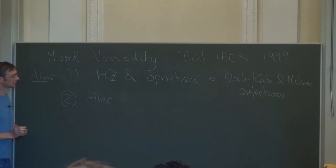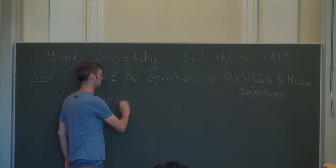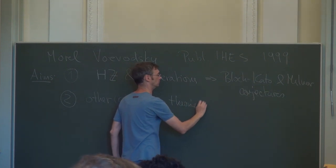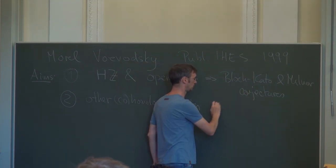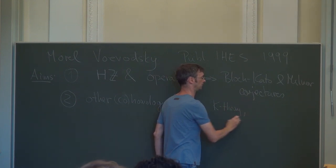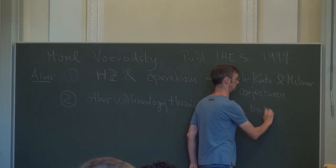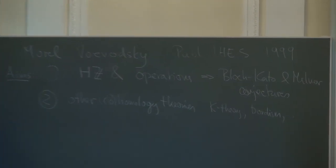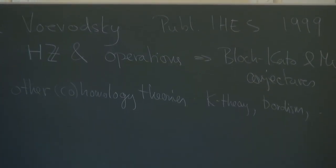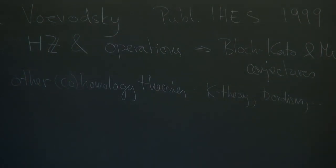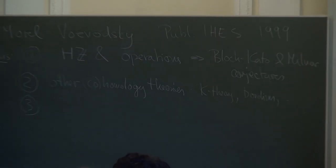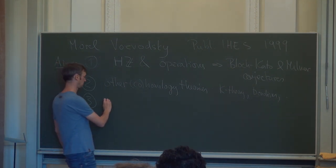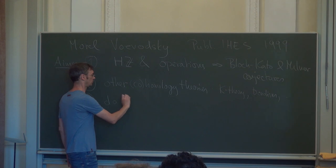In principle it is interesting to study other cohomology theories. Samples are K-theory and there are many others. This is another reasonable aim: to find a rich enough framework. The very ambitious aim, often formulated by Morel, is to do for smooth varieties what classical homotopy theory does for smooth manifolds.